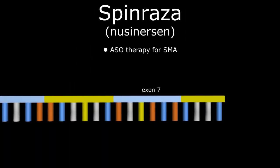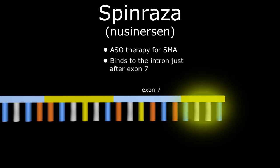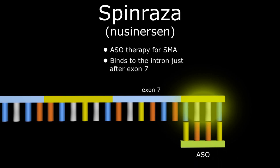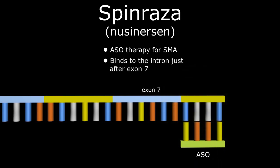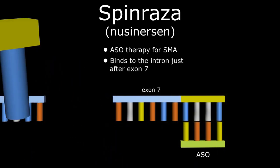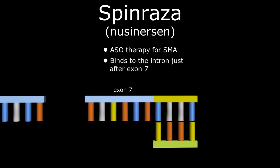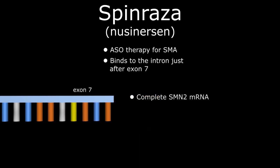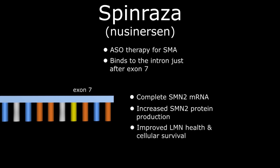Spinraza, or nusinersen, is an ASO therapy for spinal muscular atrophy that binds to the intron just after exon 7 in the SMN2 gene. ASO binding results in this segment being skipped by the spliceosome during the splicing process, thereby including the full SMN2 gene in the final mRNA sequence. As such, there is a detectable increase in the amount of SMN2 protein during translation, significantly improving lower motor neuron health and cellular survival.